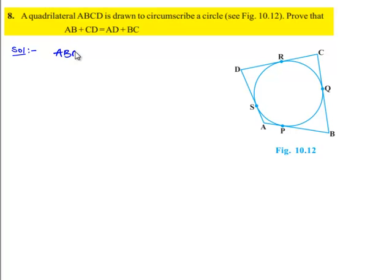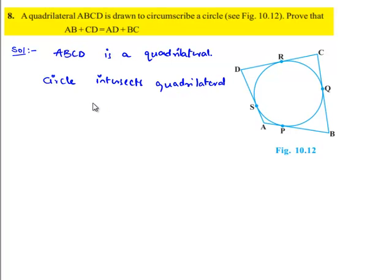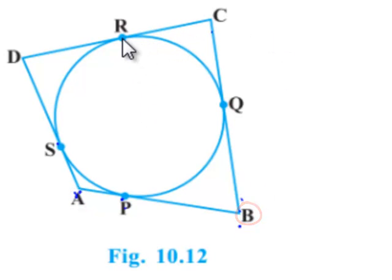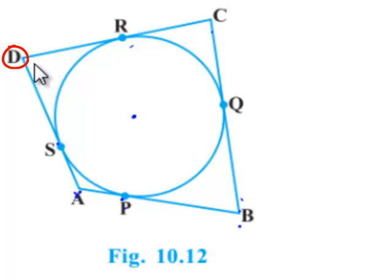Here, given that ABCD is a quadrilateral circumscribed by a circle which intersects the quadrilateral at points P, Q, R, S. If we consider the points separately — A, B, C, and D — then AS and AP are tangents from point A; PB and BQ are tangents from point B to the circle; CR and CQ are tangents from point C to the circle; and DS and DR are the other two tangents from point D to the circle.